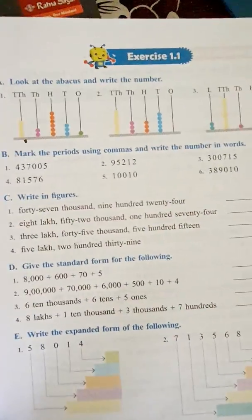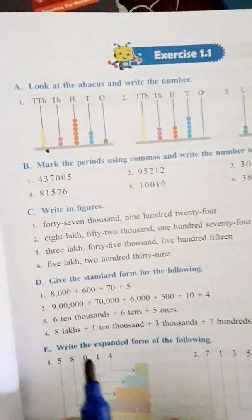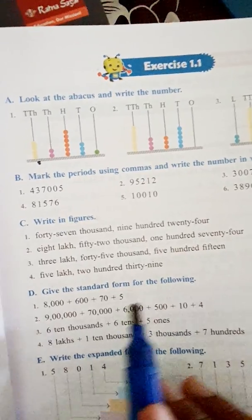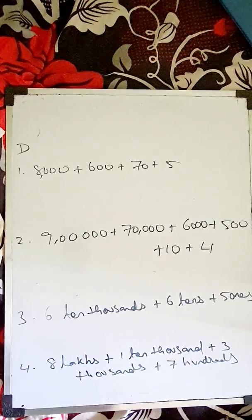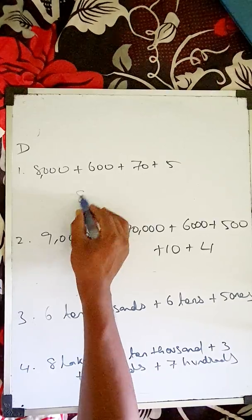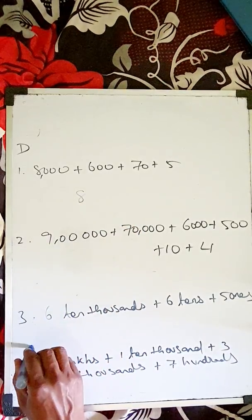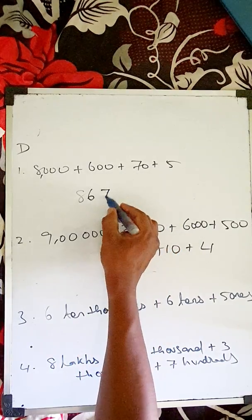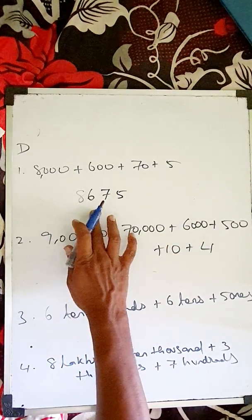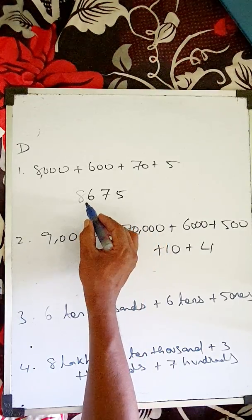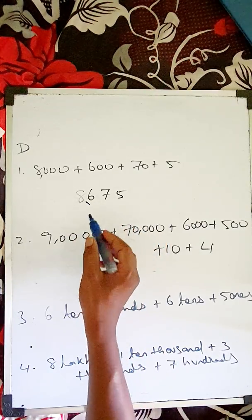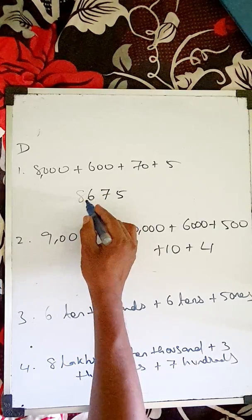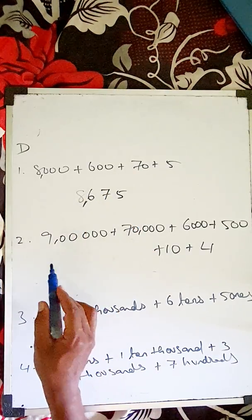Question D: give the standard form for the following. 'Eight thousand six hundred seventy-five' — put all the numbers together: eight thousand, so write eight first, then six hundred, seven, and five. So: 8,675. Three numbers, then one — eight thousand six hundred seventy-five.